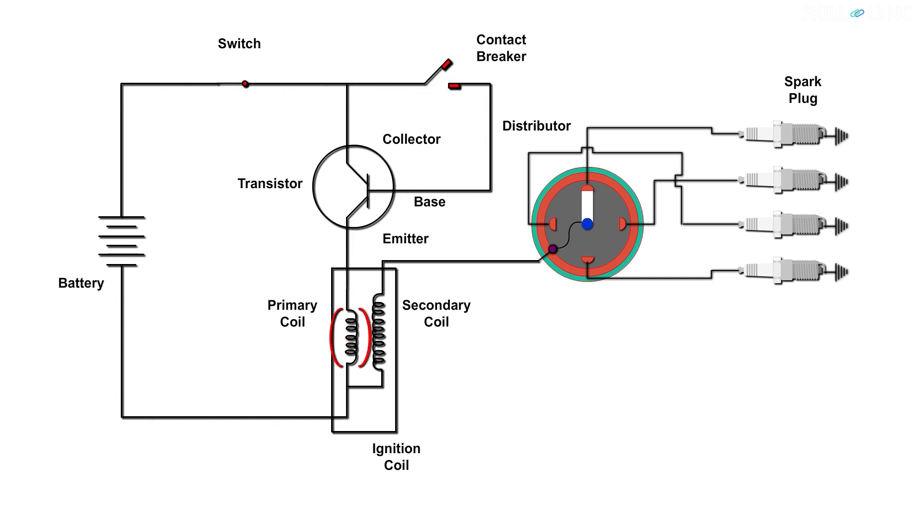But when the contact breaker opens because of the action of the cam, the current flowing to the base stops and hence, the connection will be cut off between the collector and the emitter. This changes the magnetic field in the primary coil and because of this, a high voltage is induced in the secondary coil. This results in a high current which flows through the distributor then to the spark plugs. Thus, the ignition spark is created.